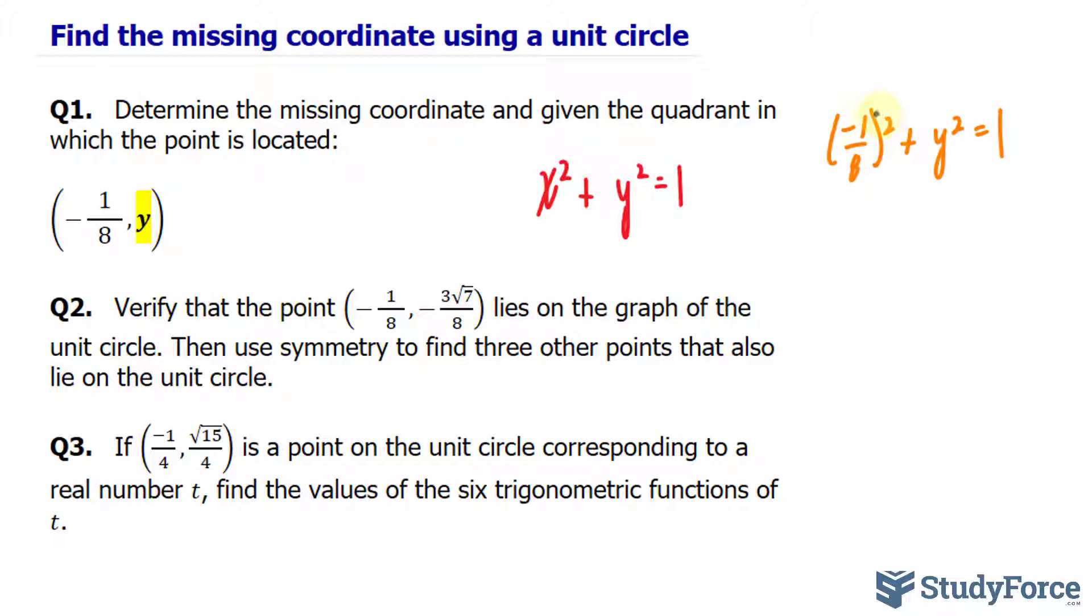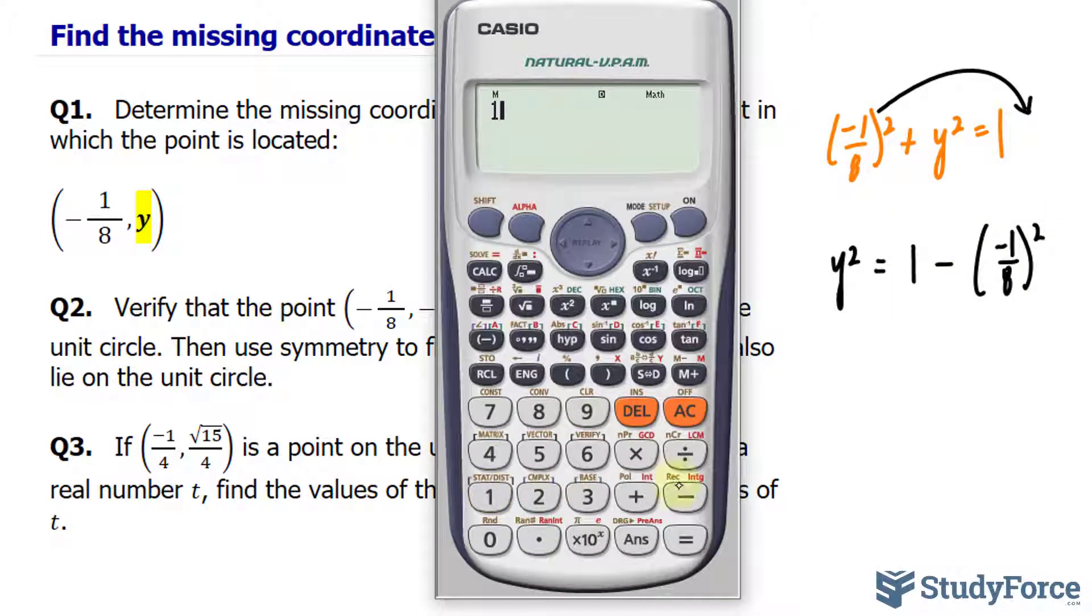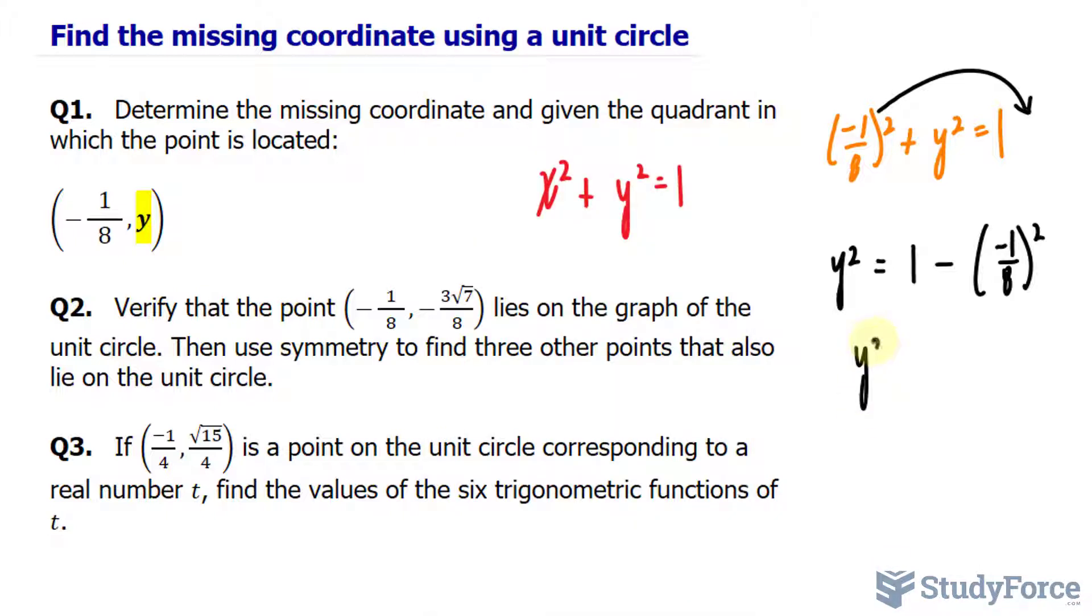To solve for y, I'll take this term over to the right side, and I have y squared on the left side is equal to 1 minus negative 1 over 8 raised to the power of 2. I'll use my calculator to evaluate the right side. 1 minus bracket negative 1 over 8 raised to the power of 2, and that gives me 63 over 64. So y squared is equal to 63 over 64.